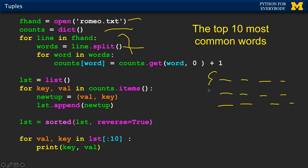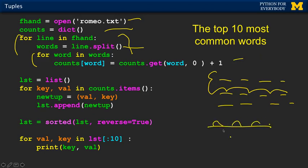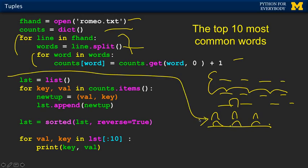And then we do count.get(word, 0) plus 1, which creates our histogram based on each word — the histograms get taller. At the end we've got the completed histogram in no particular order.